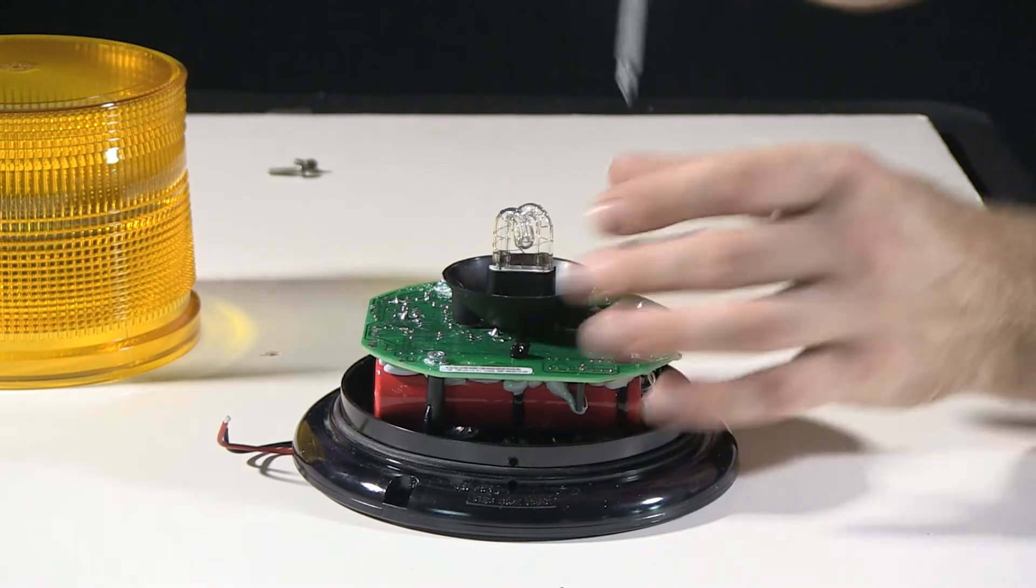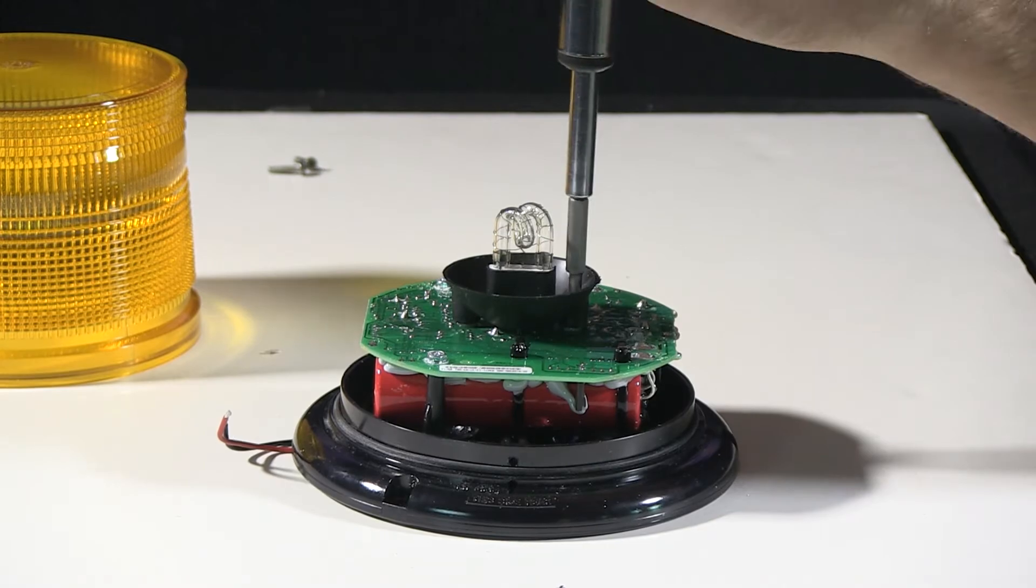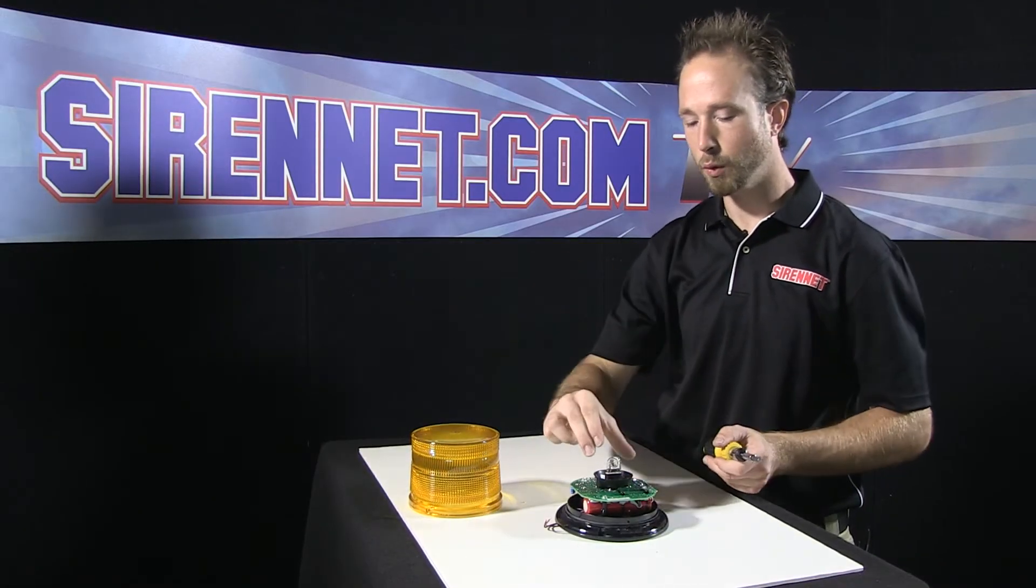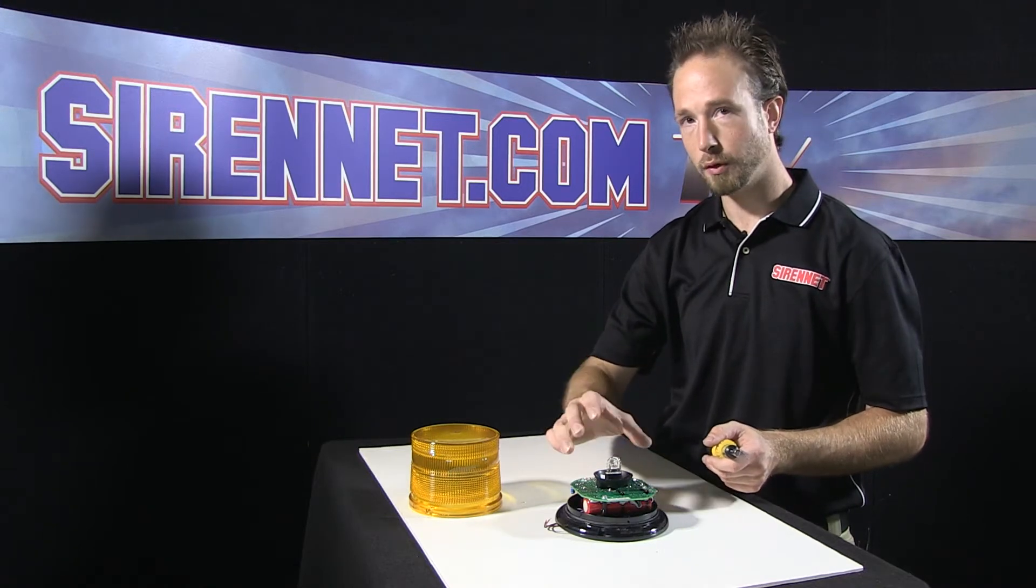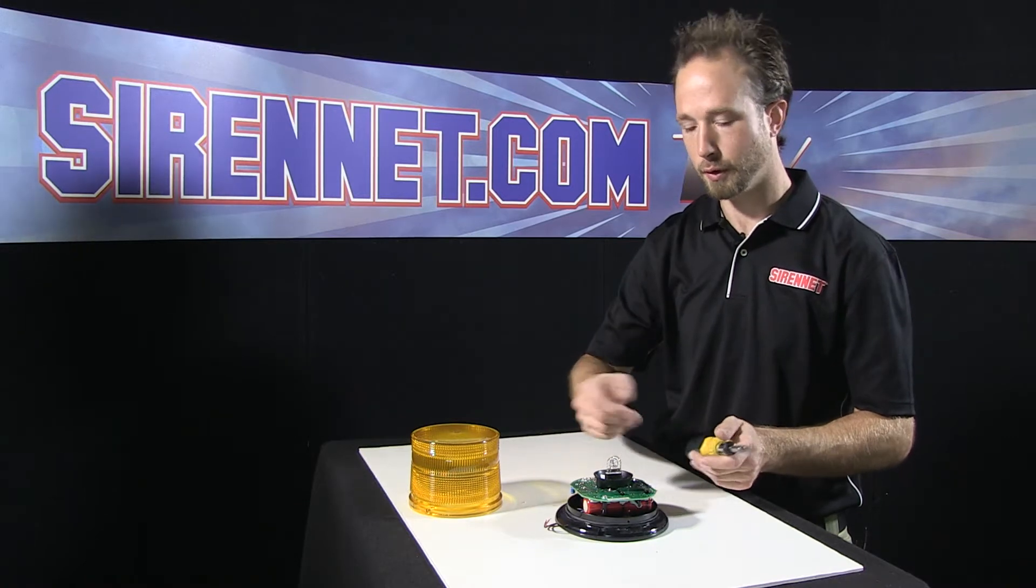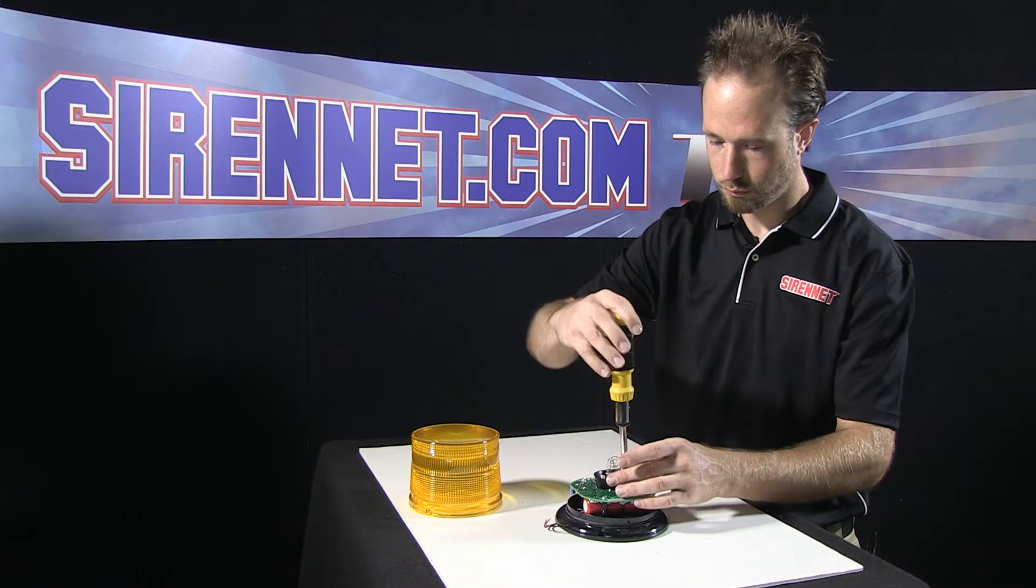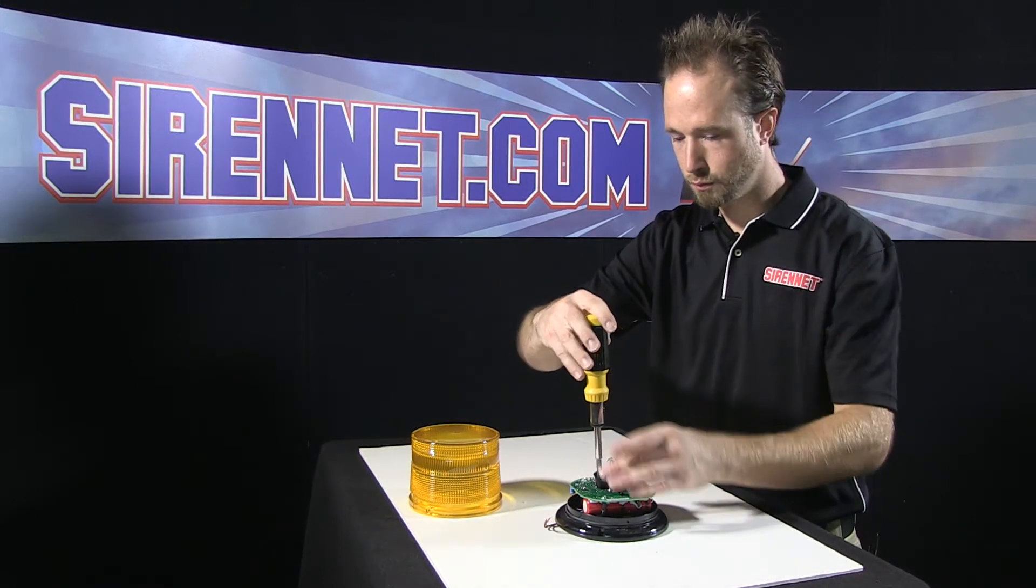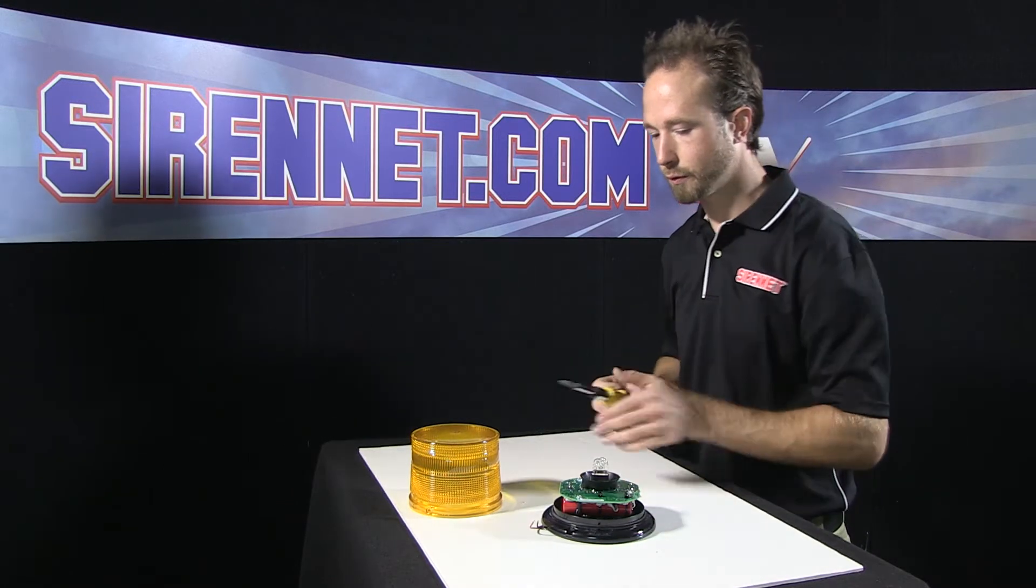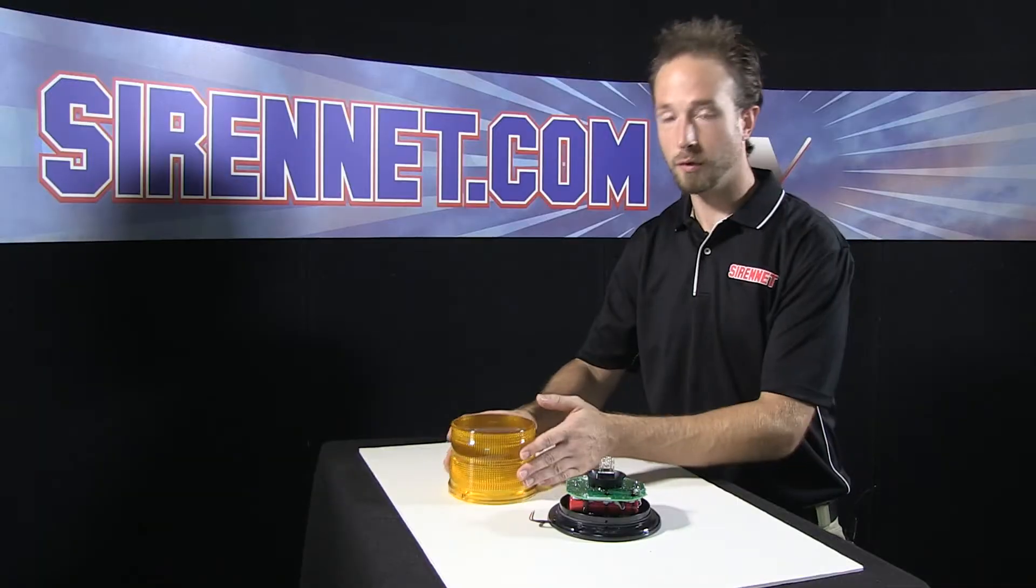Something important to keep in mind when you're working on the inside of your strobe beacon is to keep your strobe tube free of basically your hands. Somewhat like fluorescent light bulbs, if you get oils or grime on it, when you go to light up the bulb, it can possibly cause it to burst because it creates basically a weak point on it. Go ahead, snug those down, keeping both the screwdriver and my fingers free of the tube itself.